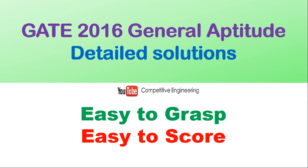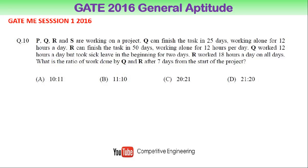GATE 2016 general aptitude detailed solutions. Here is one GATE mechanical engineering session one question from 2016. P, Q, R and S are working on a project. Q can finish the task in 25 days working alone for 12 hours a day. R can finish the task in 50 days working alone for 12 hours per day. Q worked 12 hours a day but took sick leave in the beginning of the first two days. R worked 8 hours a day on all days. What is the ratio of work done by Q and R after 7 days from the start of the project? Options are: A) 10:11, B) 11:10, C) 20:21, D) 21:20.